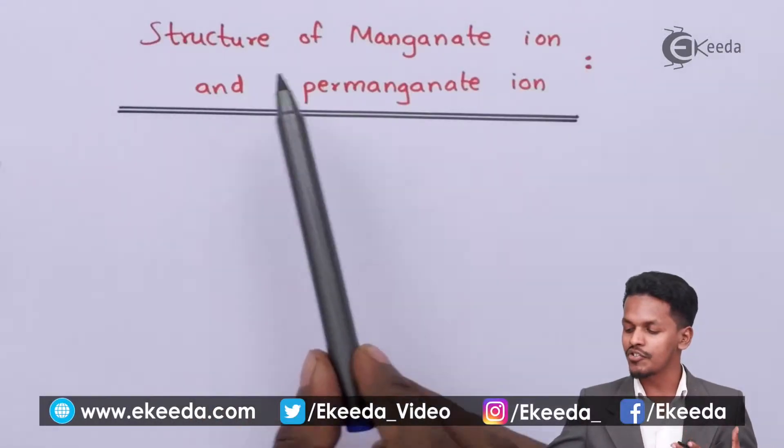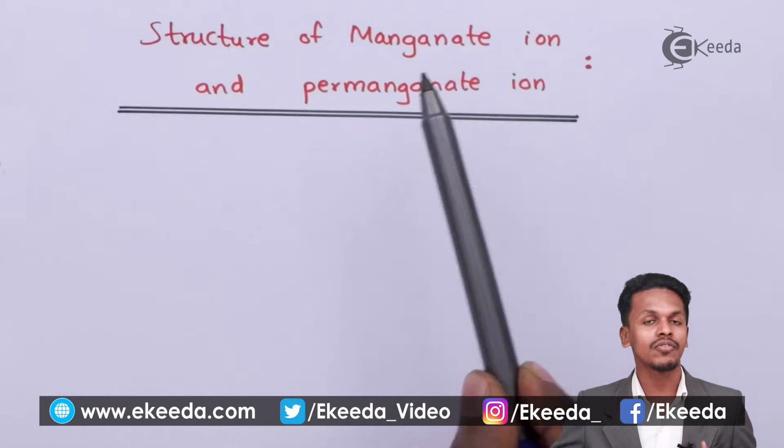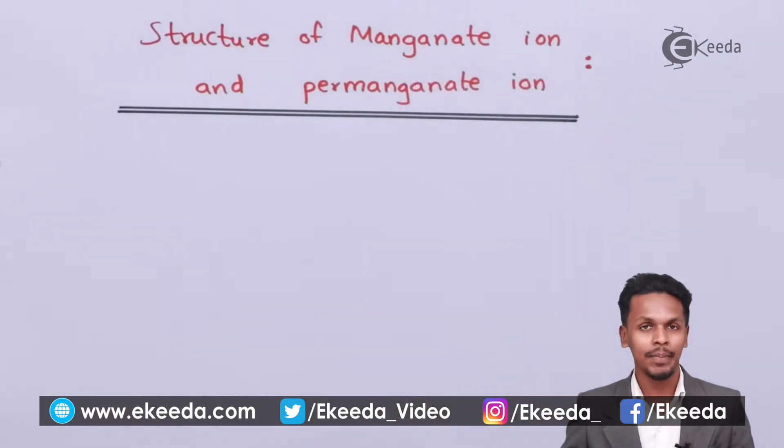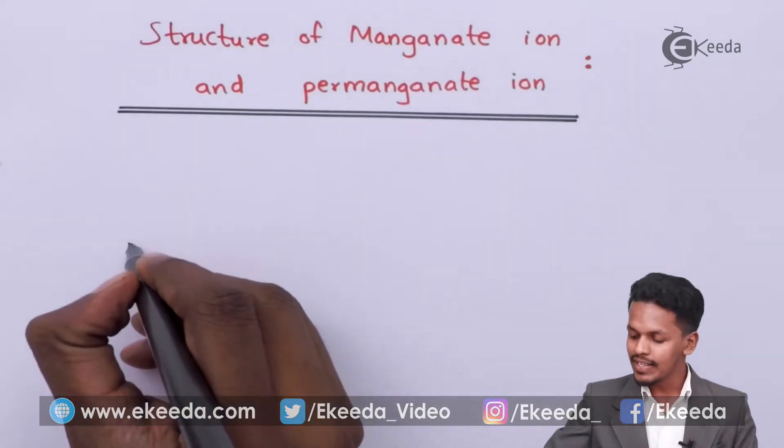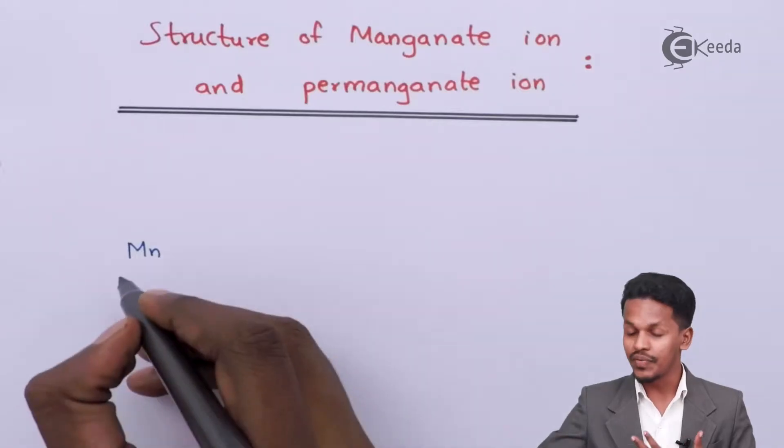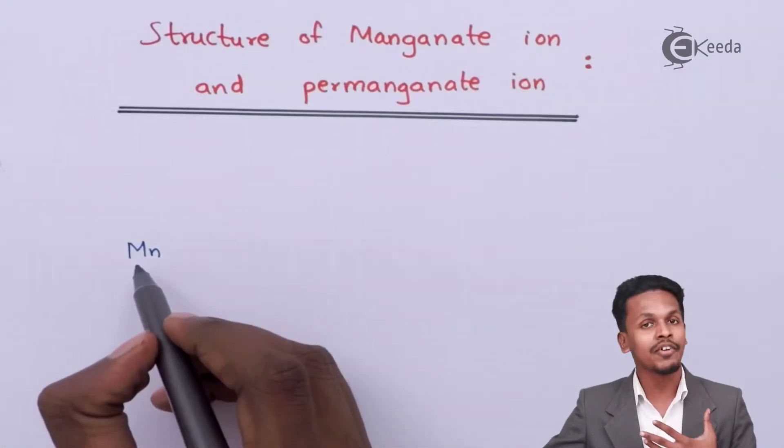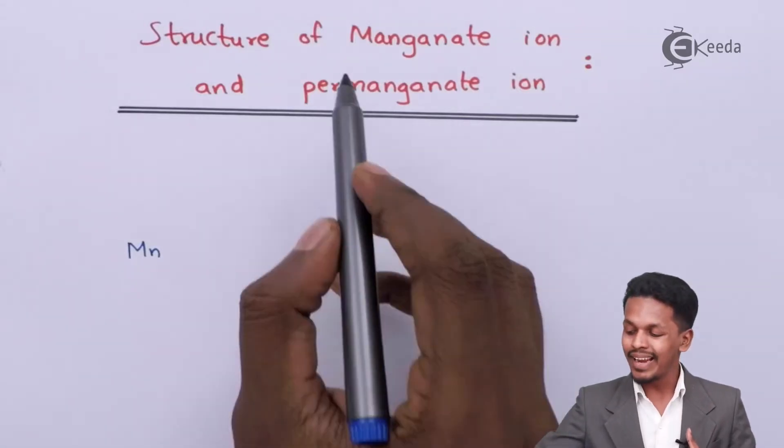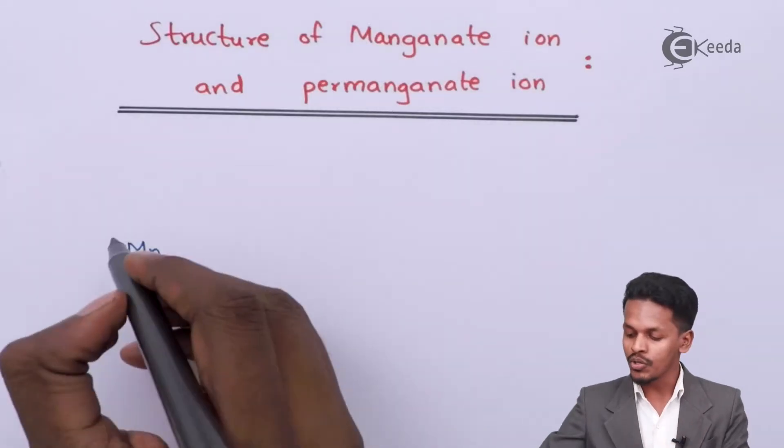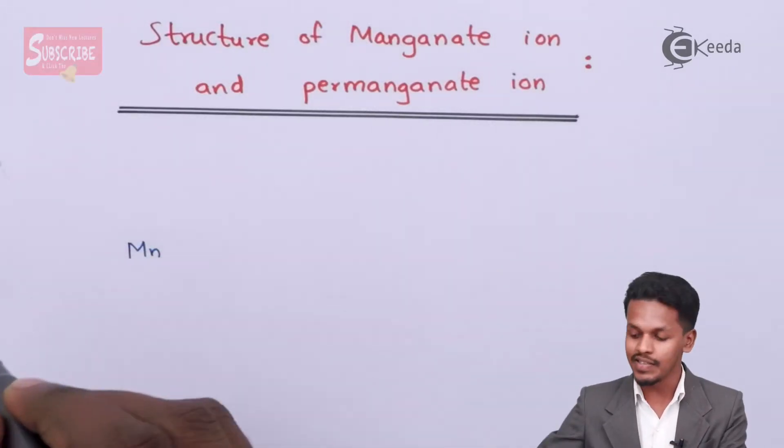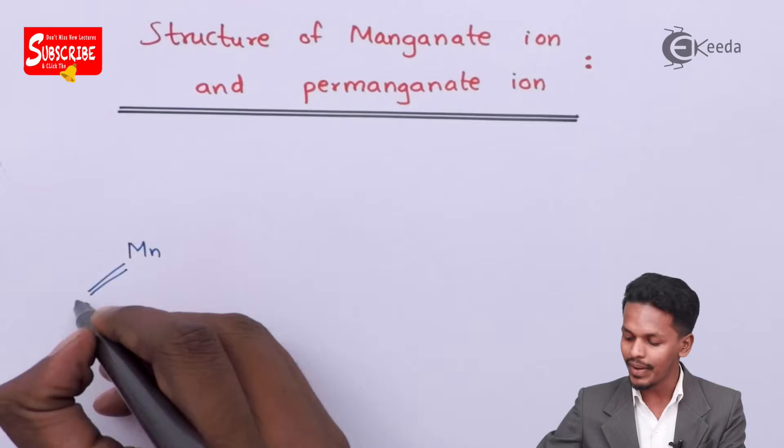I'm going to talk about the structure of manganate ion as well as permanganate ion. Let me discuss the manganate ion. In this case, manganese is the central atom and it undergoes a hybridization process. The manganese is the central atom while it has been surrounded by the oxygen atoms.